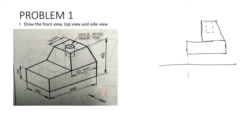We can extend these lines and clearly indicate what the top view is. We have the square edges and we are just extending all the lines and making them in a parallel way. After that, we have the top view now.